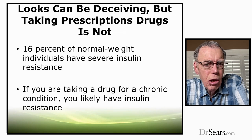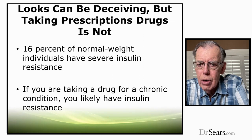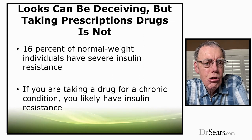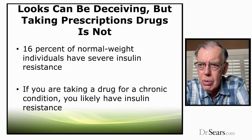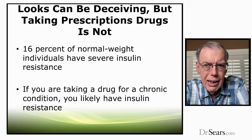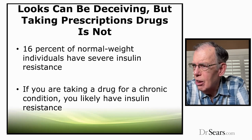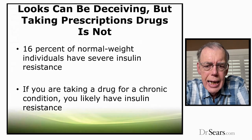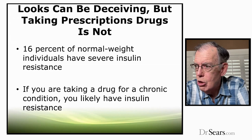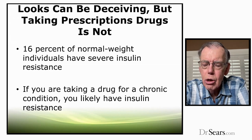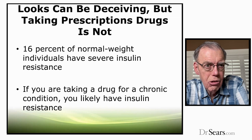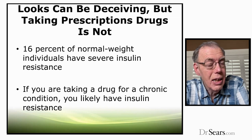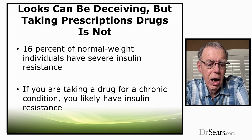Sometimes looks can be deceiving. About 16% of normal weight individuals have severe insulin resistance — they're no longer well, and they're fast-tracking toward chronic disease, but they look good in a swimsuit. If you're taking a drug for a chronic condition, especially a metabolic condition, you're likely to have insulin resistance. Most Americans no longer look good in swimsuits, and Americans are taking lots of drugs — that tells us right away that a lot of Americans have severe insulin resistance.